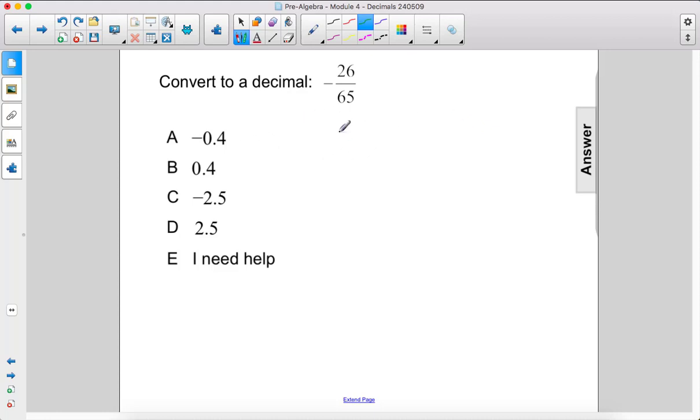Convert to a decimal: negative 26 over 65. So we're going to be dividing 26 by 65. Now 65 does not go into 26, so we're going to add a decimal 0.